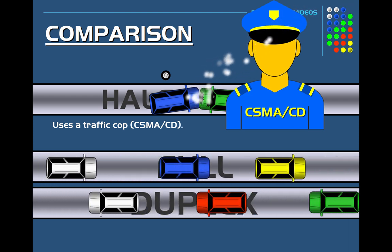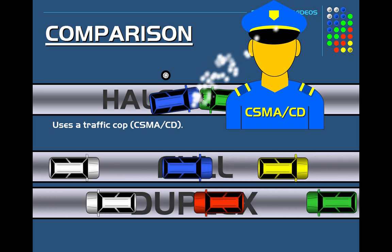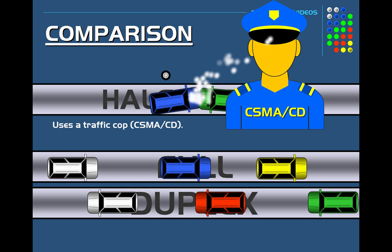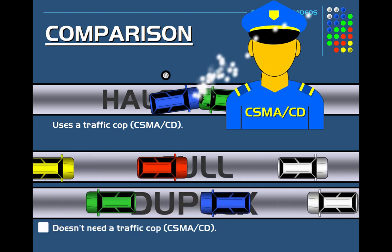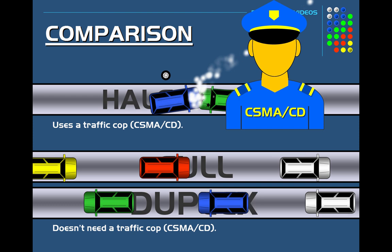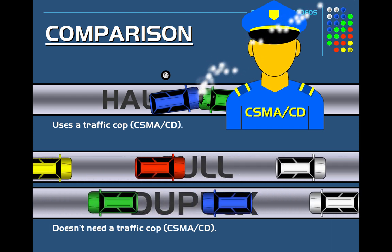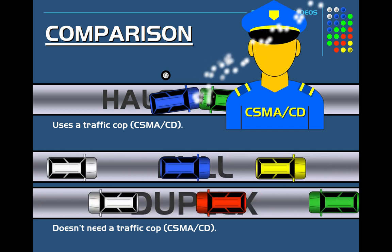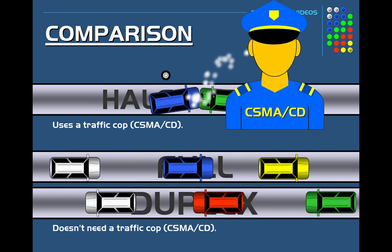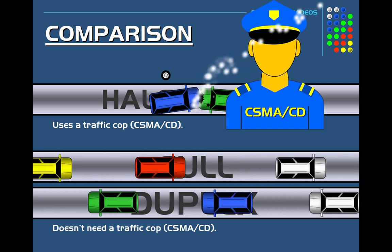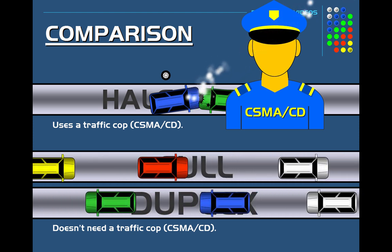In a full duplex, the cars don't have to wait. You can compare full duplex to a two-lane highway where each lane is dedicated for one direction. Cars traveling in opposite directions have their own dedicated lane to their destination. Since each direction has its own dedicated lane, it avoids collisions and there is no need for a traffic cop.